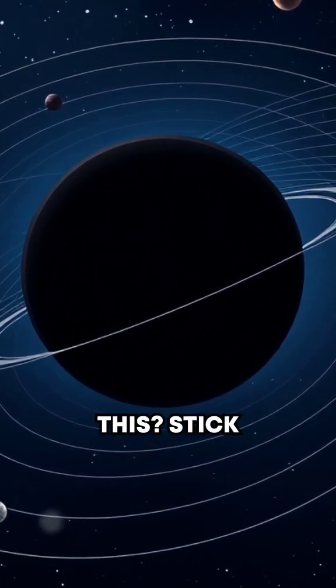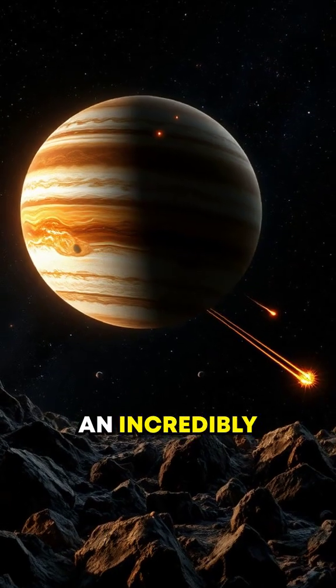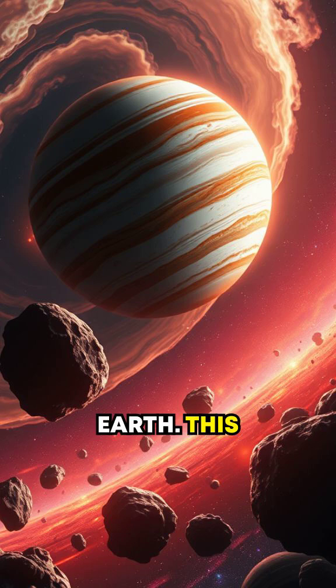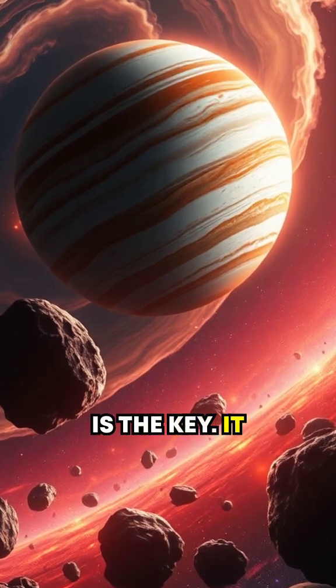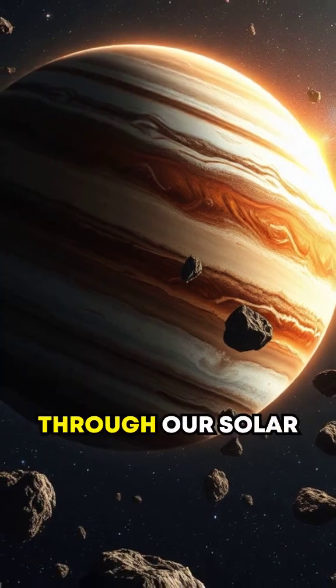But how does it achieve this? Stick around, the answer will amaze you. Jupiter has an incredibly strong gravitational field, about 2.5 times that of Earth. This tremendous pull is the key. It influences the paths of asteroids and comets that zoom through our solar system.